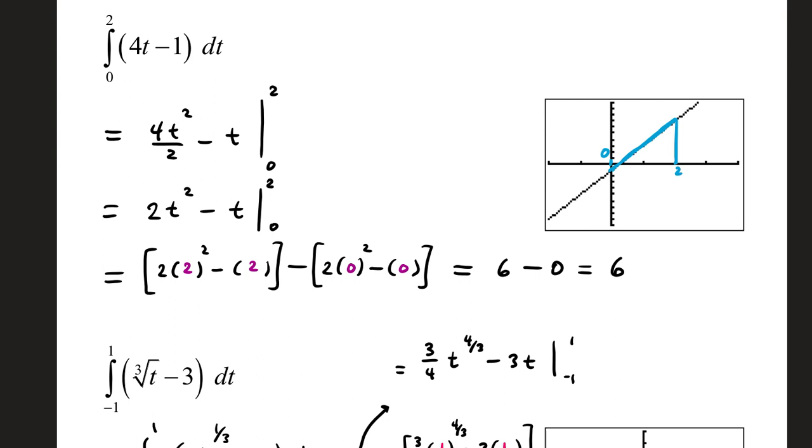So 2t squared is the antiderivative of 4t, minus 1 has an antiderivative of negative 1t. Definite integrals, you'll have a lower and an upper limit. You evaluate the antiderivative at both values, top value first. So we're going to have 2t squared minus t evaluated with a 2, minus, and then we're going to take that antiderivative and substitute in a 0, the lower limit.